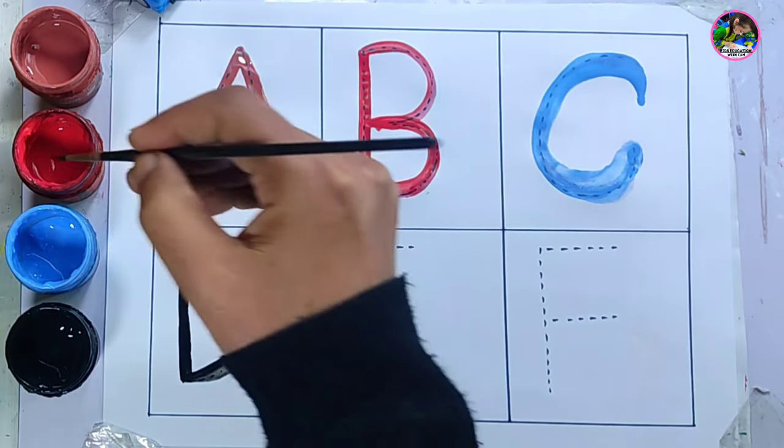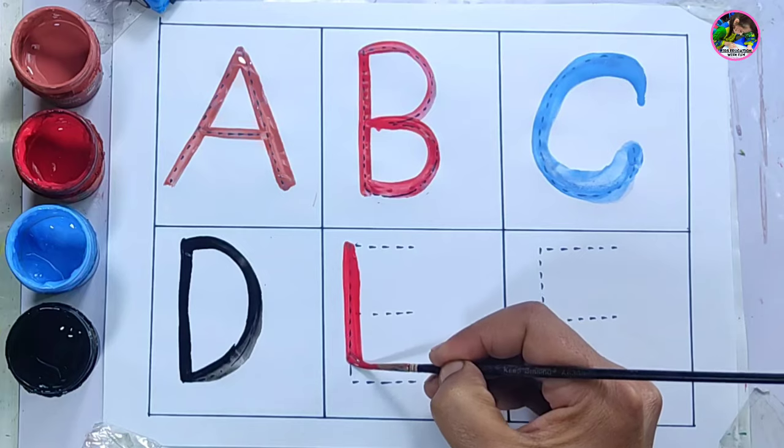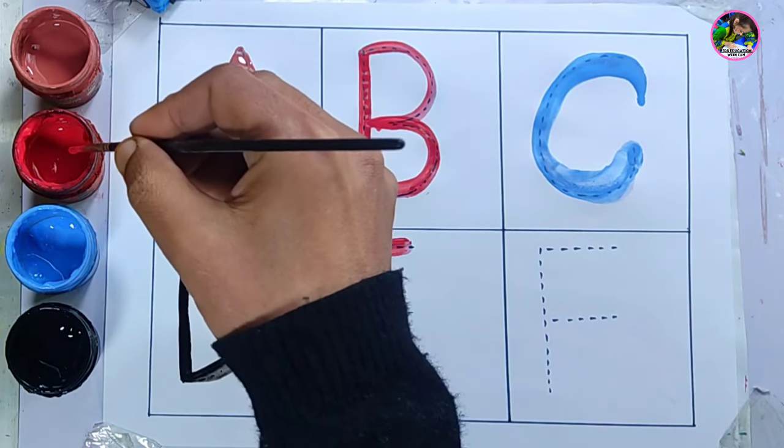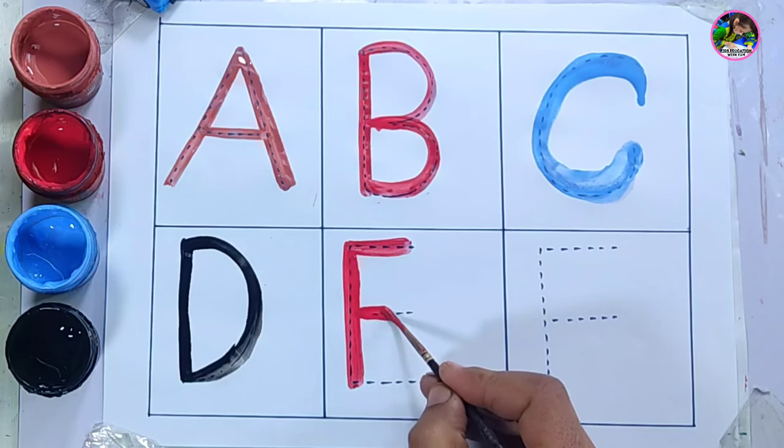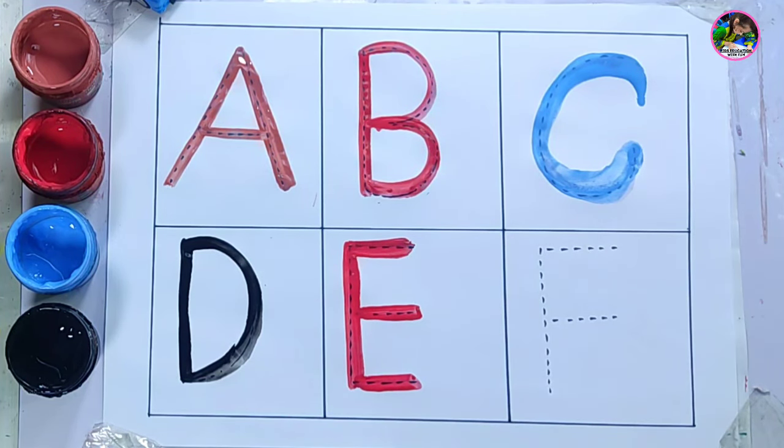Let's take red color again. Red color, letter E. What is it, children? Letter E. E is for elephant. Elephant kehte hai haati ko. E is for elephant.